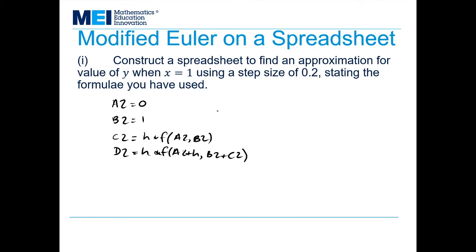And then my A3 was given by A2 plus h. My B3 was given by B2 plus (C2 plus D2) over 2. That's the average of k values. And then once I'd done all of that, I just filled this down to get my approximations.